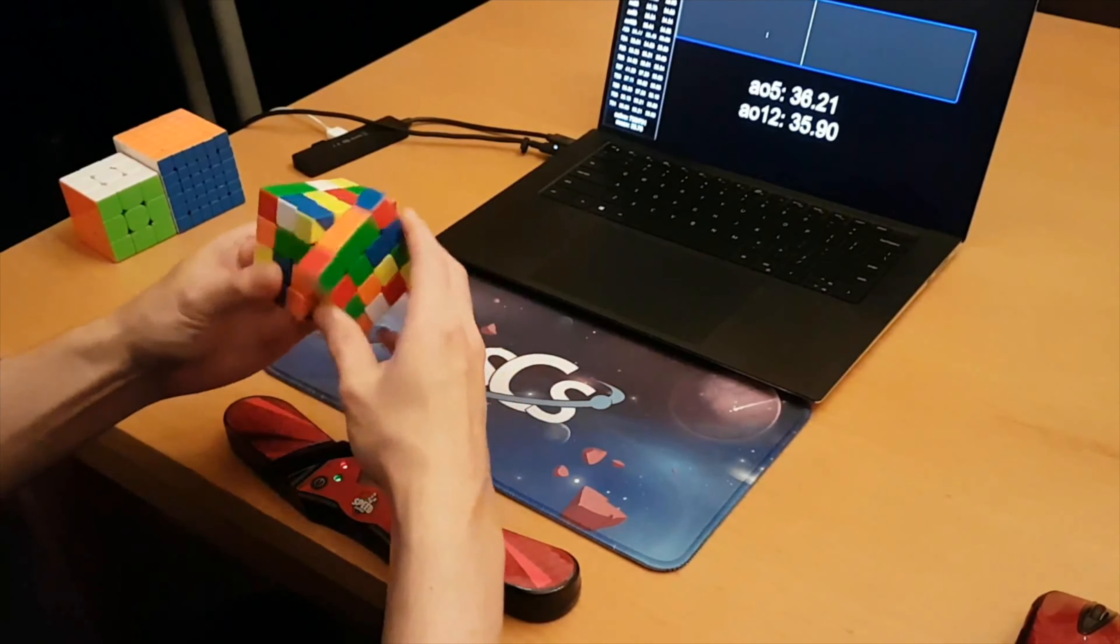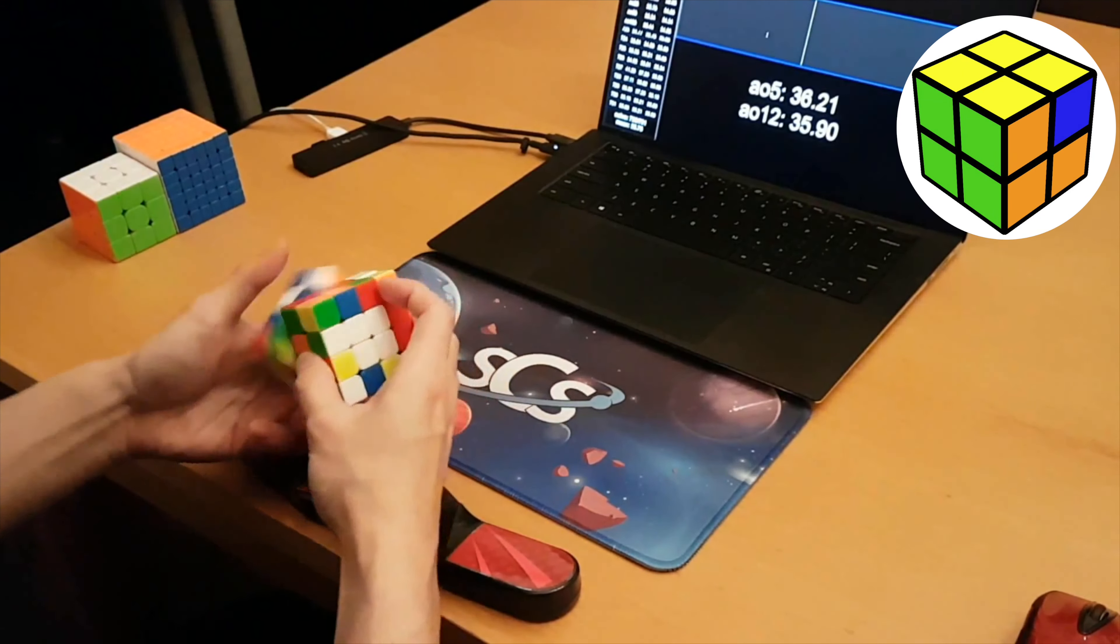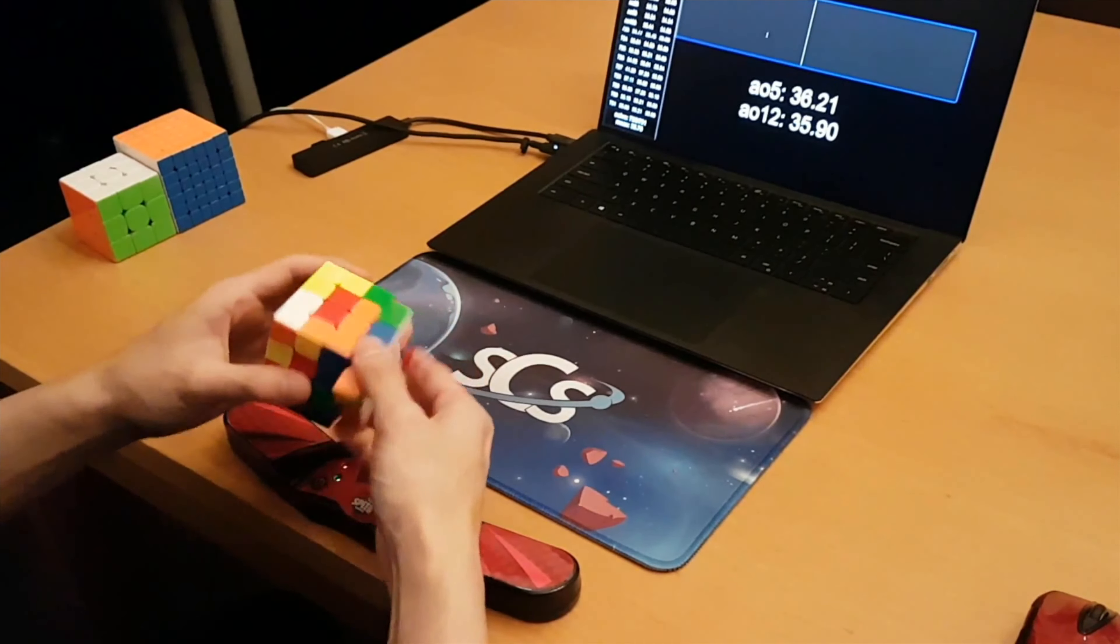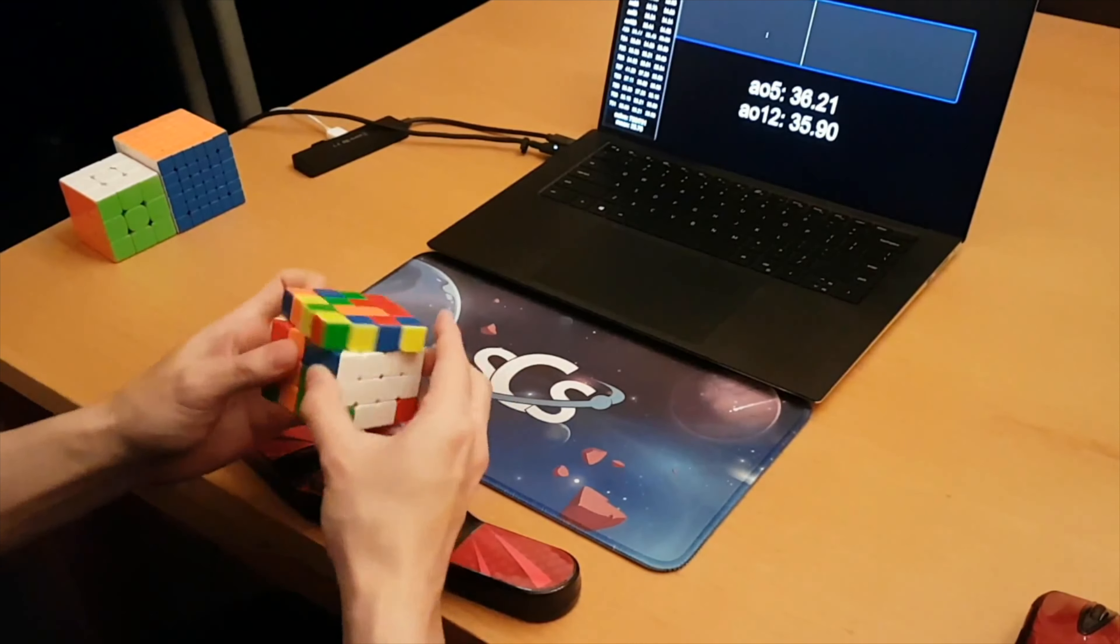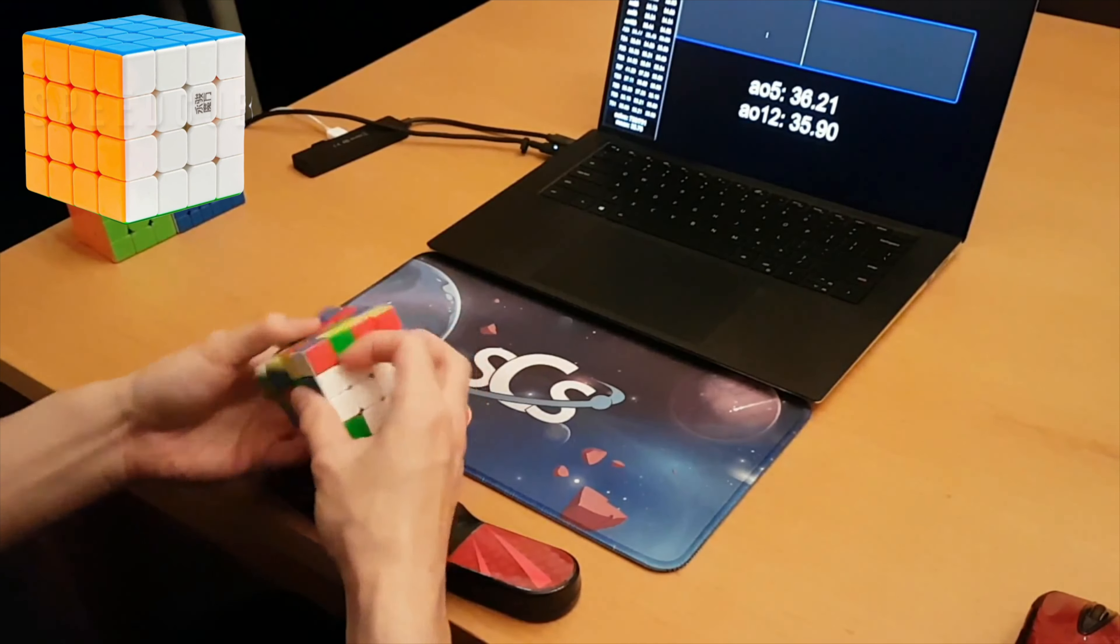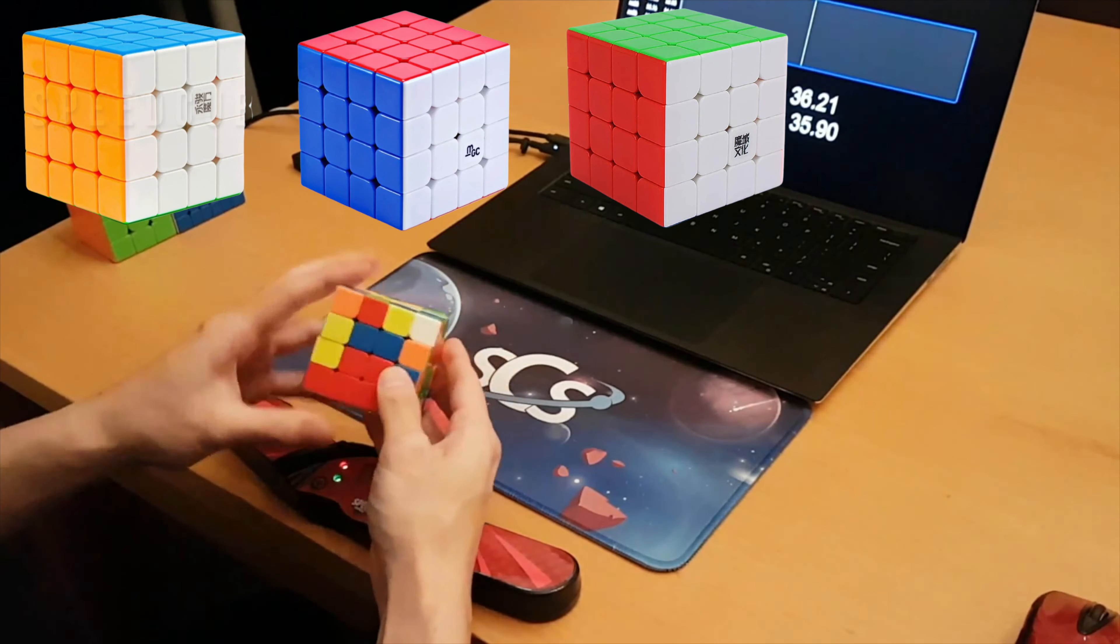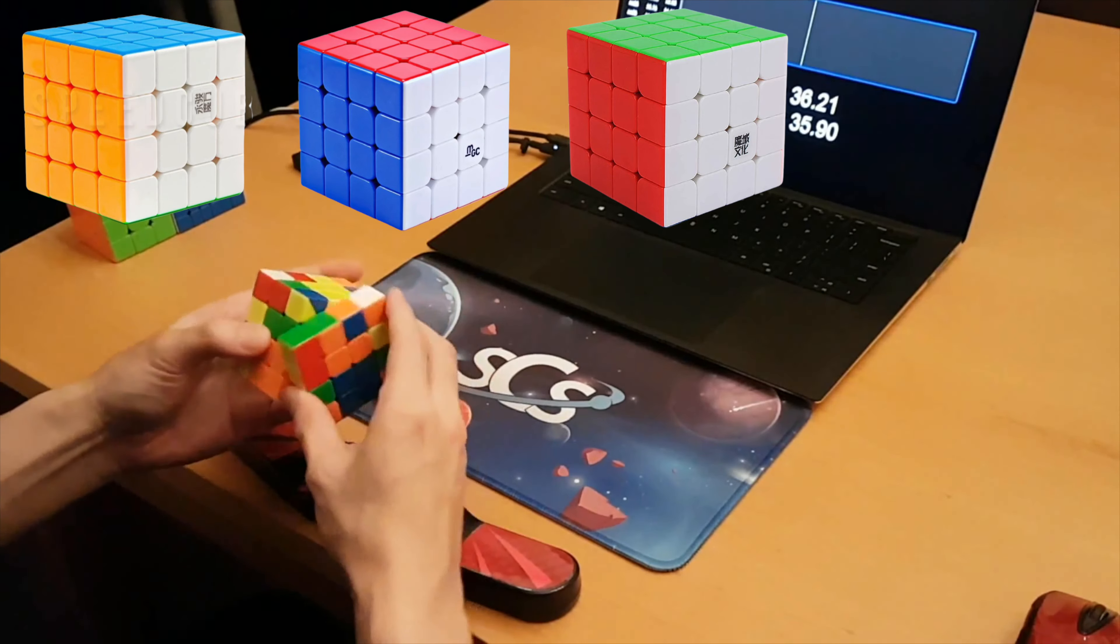Hey everyone, it's Dylan or Jay Perm. The Aosu WRM or Wyrm is my main 4x4 mainly because of its size. I would actually give the title of best 4x4 to the Mini YJ 4x4 and the YJ MGC and the Wyrm. All of these cubes turn effortlessly fast and have great control.